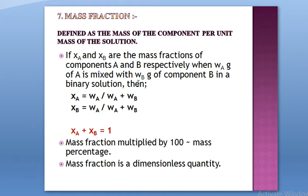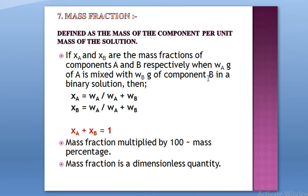The seventh concentration term is mass fraction. It is defined as the mass of the component per unit mass of the solution. Suppose Xa and Xb are the mass fractions of components A and B respectively. When 'wA' grams of A is mixed with 'wB' grams of B in a binary solution, then Xa = wA / (wA + wB). Similarly, mass fraction of B: Xb = wB / (wA + wB).